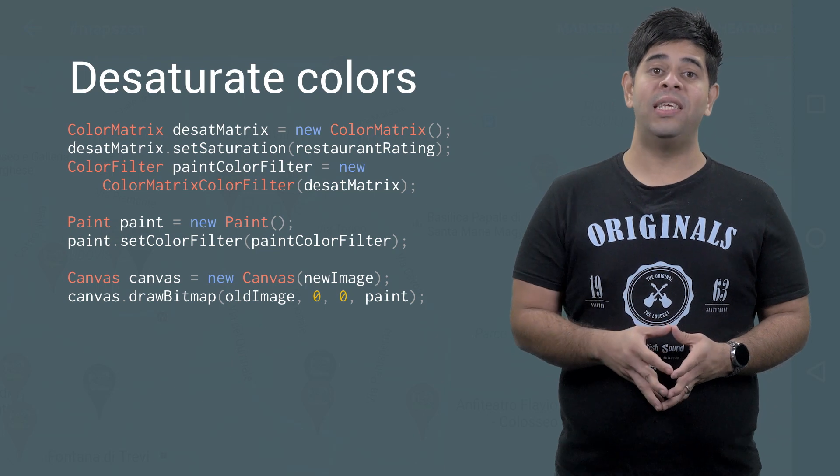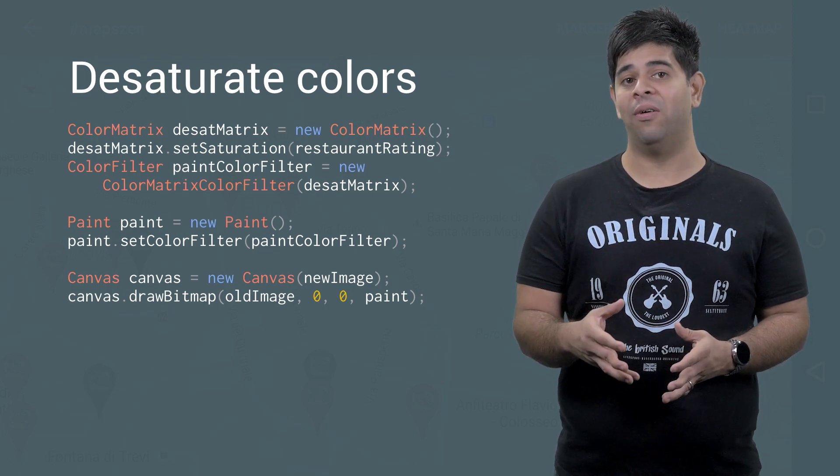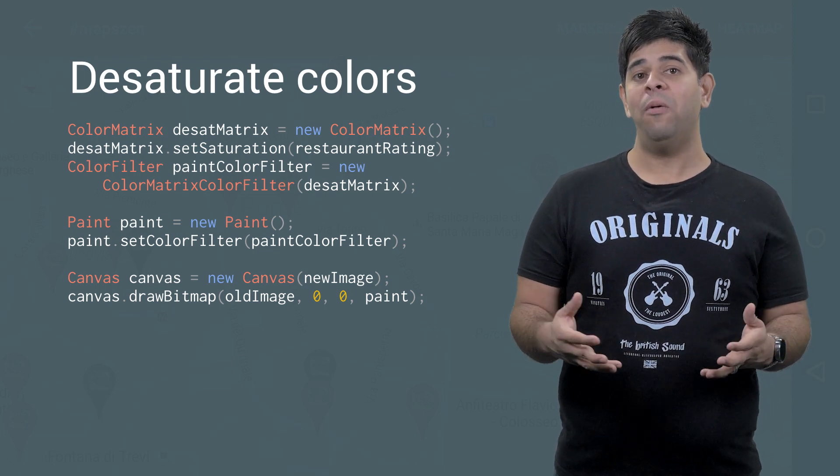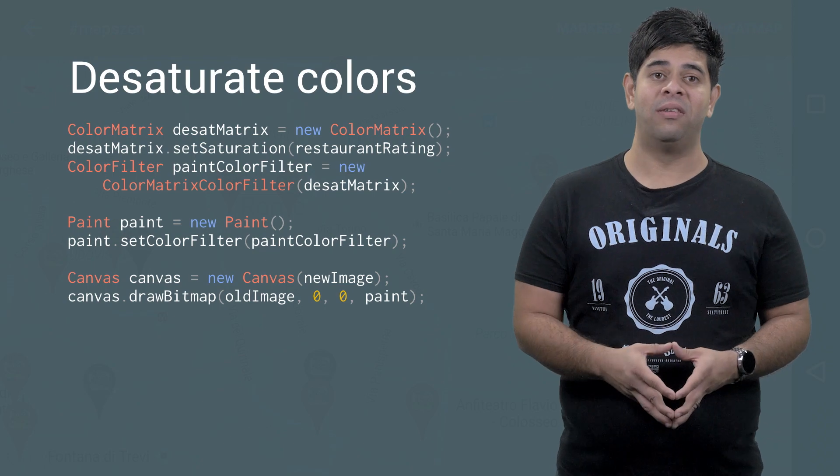First, we set up the color filter based on the rating scale, and then we apply the filter to the marker image.